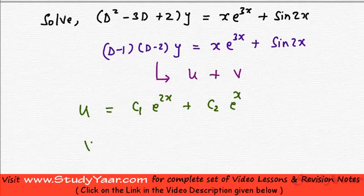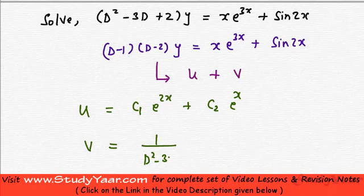My v is going to be 1/(D^2 - 3D + 2) times the function of x, which is x·e^(3x) + sin(2x).